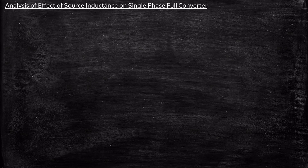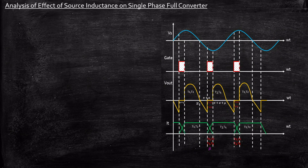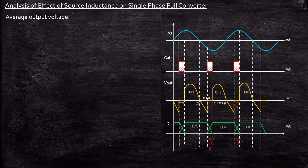Hello everyone. In this video we'll be taking a look at analysis of the effect of source inductance on a single phase full converter. This is a continuation of our previous video where we analyzed the waveforms and circuit operation. In this video we'll be focusing on the derivation — the analysis part — of deriving the average output voltage expression. This is a very important derivation and we need to remember the formulas as they are extremely important for solving numericals.